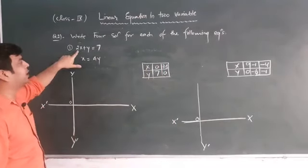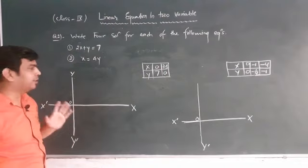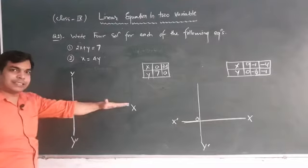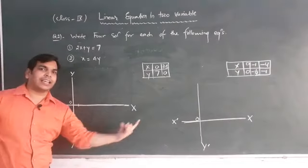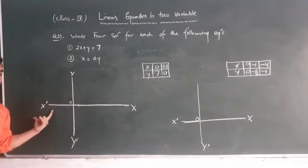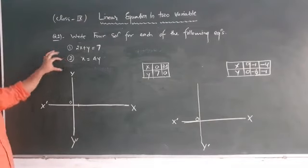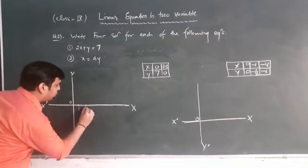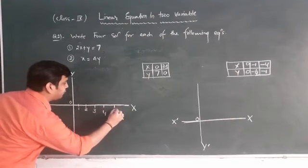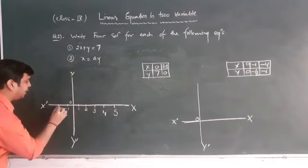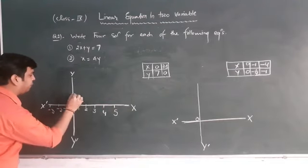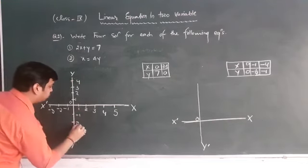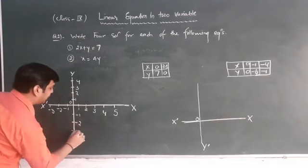Now you can see we will represent these two solutions on this graph and these two solutions on this graph. First we will move with equation number one: 2x + y = 7. Our solutions are zero comma seven. So first on this axis, horizontal axis is taken as X X-dash - positive values towards X and negative values towards X-dash. In the similar way, vertical axis has positive values towards Y and negative values towards Y-dash. So positive side 1, 2, 3, 4, 5. Here minus 1, minus 2, minus 3. Here 1, 2, 3, and 4. Here minus 1, minus 2, minus 3.